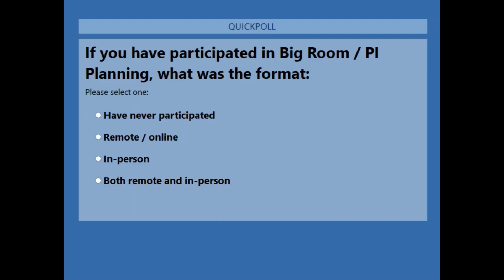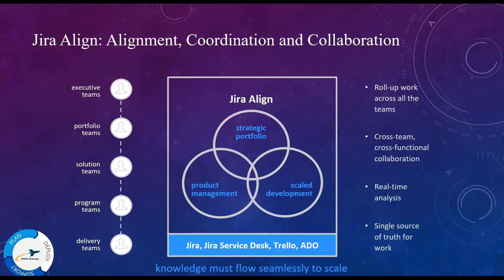To set context, Jira Align supports scaled agile from team to enterprise and helps manage PI planning and other planning aspects, as well as the execution of work across dimensions such as products, people, teams, time, and agile value delivery practices. With Jira Align you get real-time visibility for your entire organization, align every team to strategy, and optimize value delivery. Think of Jira Align as the unifying platform where product management, portfolio leadership, and development teams come together on a single platform leveraging a single source of truth.